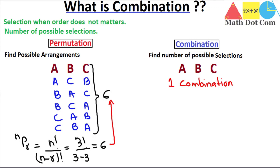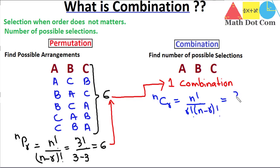It doesn't matter whether we write BAC, CBA, or ACB — all six arrangements in permutation equal just one arrangement in combination. Using the combination formula: nCr equals n factorial divided by r factorial into n minus r whole factorial. Here n is 3 factorial, r is also 3 factorial, and 3 minus 3 is 0 factorial, which equals 1. Canceling gives us 1, which confirms there is only one combination of the word ABC.